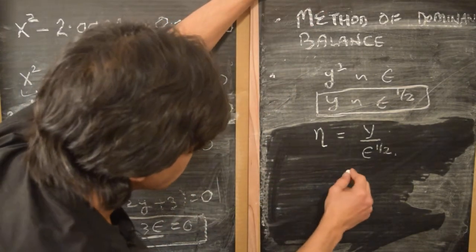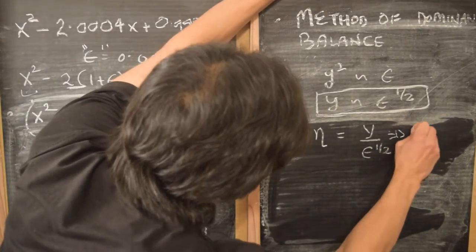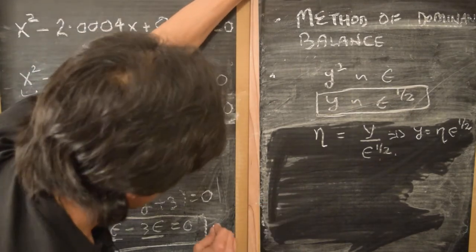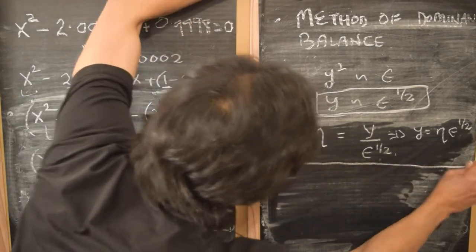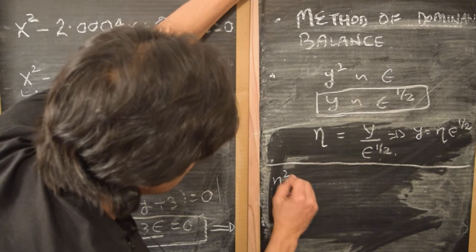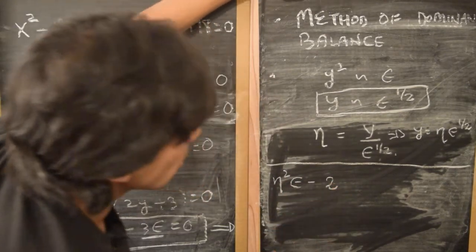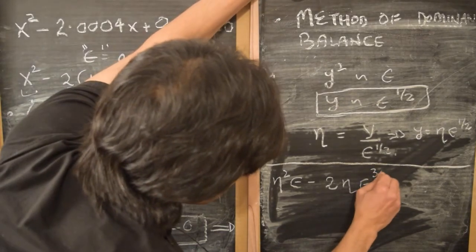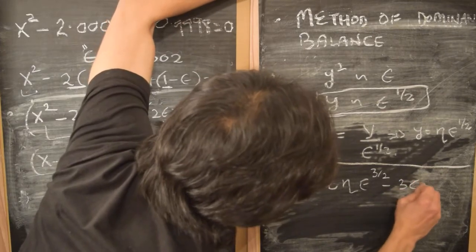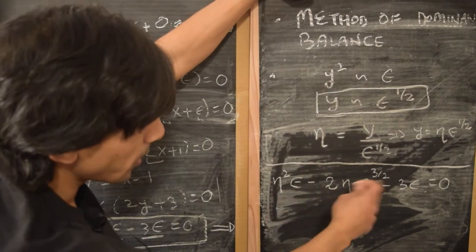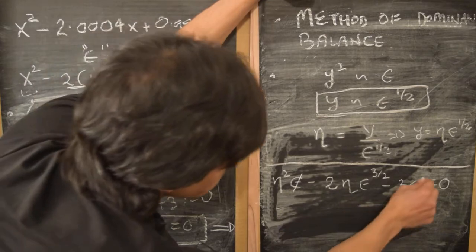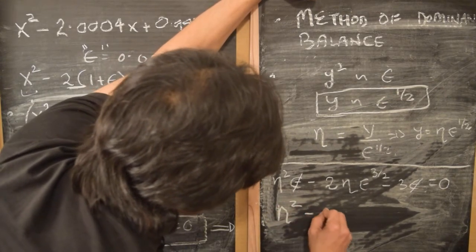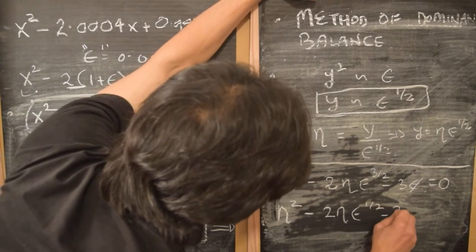If y is η times ε to the power of one-half, then y² is η²·ε. Looking at the equation in terms of η: y² gives η²·ε, minus two times y gives −2η·ε^(1/2), and then there's an ε giving ε^(3/2), minus 3ε equals zero. We can cancel a common factor of ε, giving us the new equation: η² − 2η·ε^(1/2) − 3 = 0.